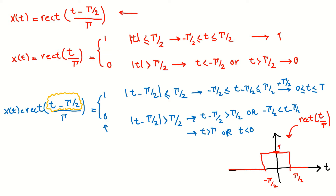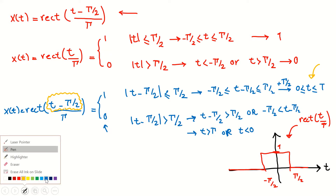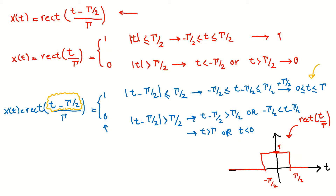Now I can plot that. For time between 0 and tau, the value of the signal is 1. So if tau/2 is here, then tau is here, and for time between 0 and tau the height of the signal is 1. For T outside this range the value of the signal is 0. This yellow one is the time-shifted version of rect(T/tau), shifted to rect((T minus tau/2)/tau).